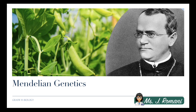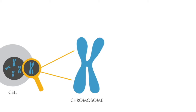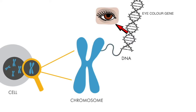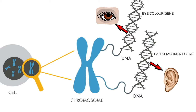Hi guys, it's Ms. Ramani again, and this week we're going to learn about a type of genetics called Mendelian genetics. Mendelian genetics helps us understand some of the most basic rules that govern how traits are inherited from one generation to the next. By now you know that most of your traits, from your eye color to the shape of your earlobe, are influenced by genes found on your DNA, and that DNA is organized into chromosomes found in the nucleus of all your cells. You also know that those genes were passed on to you by your parents.